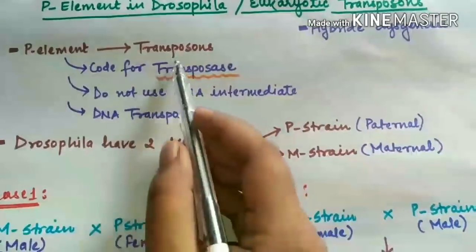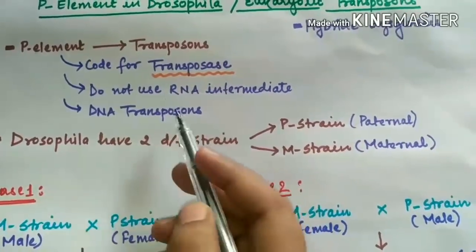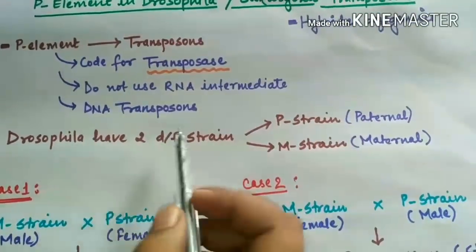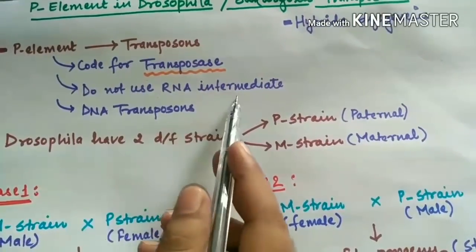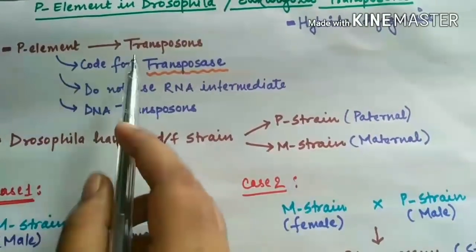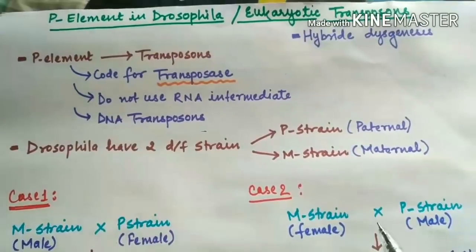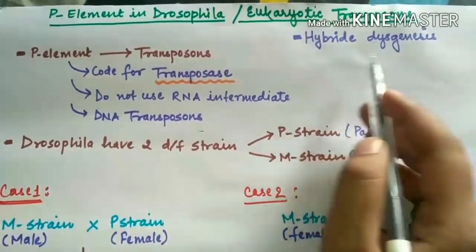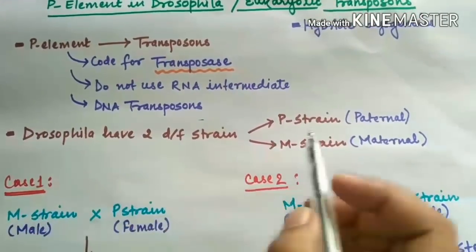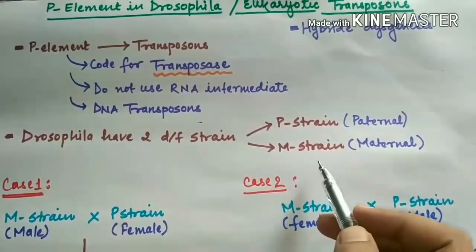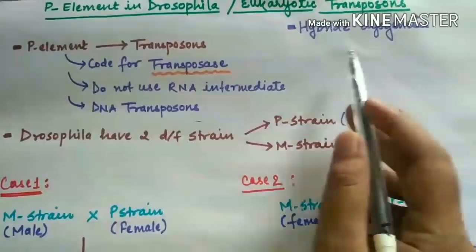The P element acts as a transposon which codes for an enzyme known as transposase. They do not use an RNA intermediate — they use a DNA intermediate — which is why they are called DNA transposons, not retrotransposons. With the help of this P element, we will also discuss hybrid dysgenesis, which is a type of genetic disorder seen in the germline.